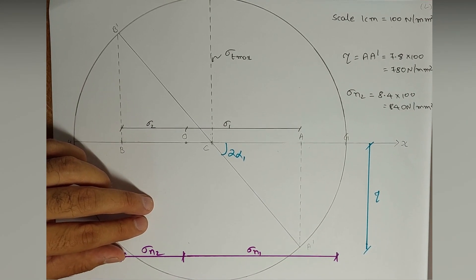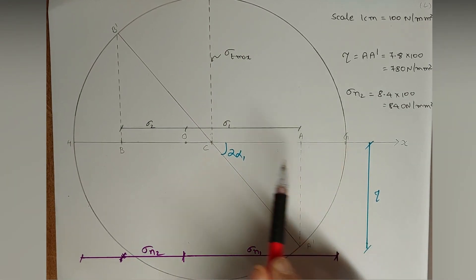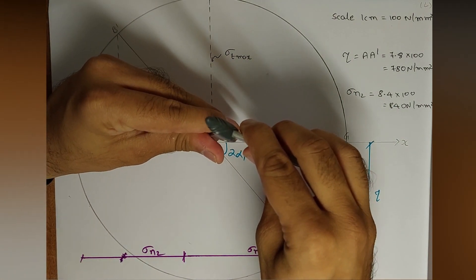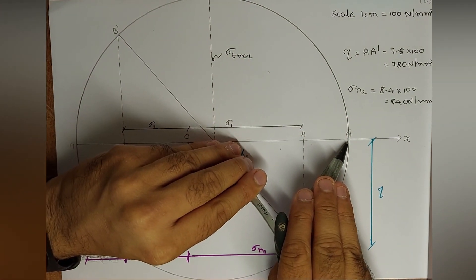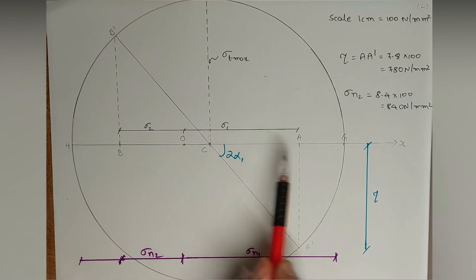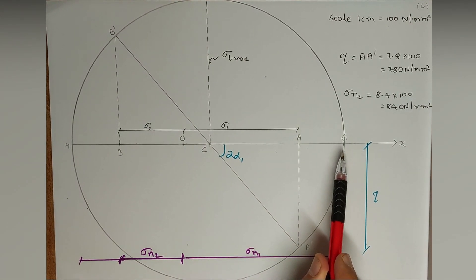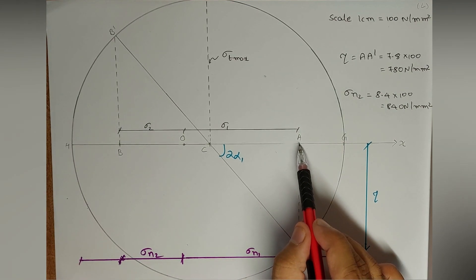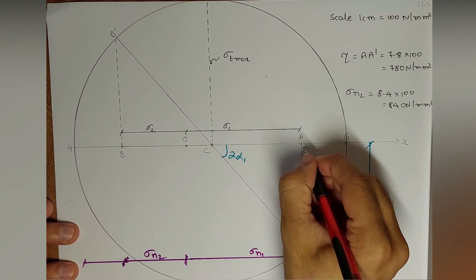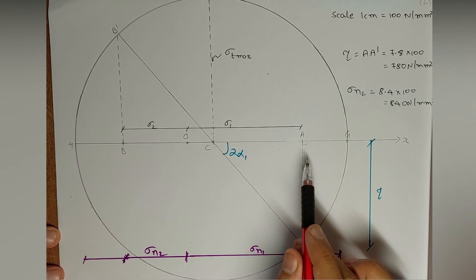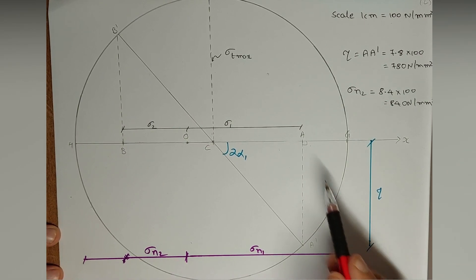Taking center C and radius CG, we draw a circle. This is the key difference — this time we are not drawing the circle with radius CA; we are drawing it with radius CG, corresponding to Sigma N1, the major principal stress of 1250 N/mm² (12.5 cm). The next step is to draw a vertical line downward from A at 90 degrees, intersecting the circle at point A dash.